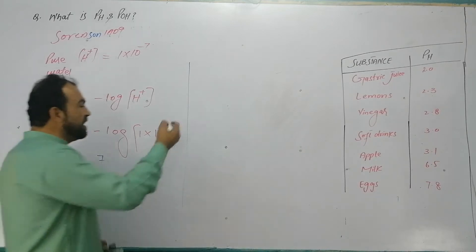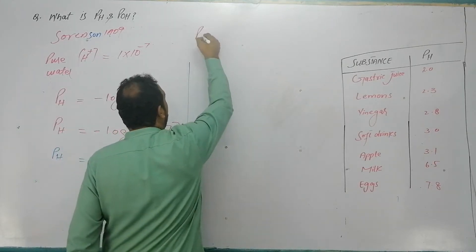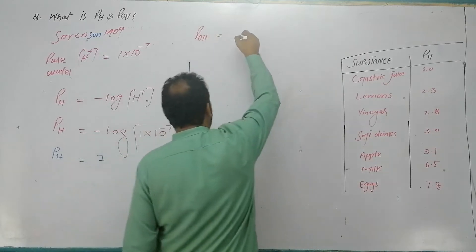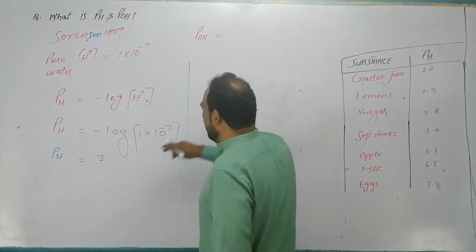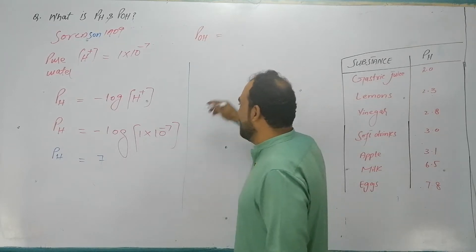Now pH is equal to minus log of concentration of H positive ions in pure water, which is equal to 1 into 10 raised to power minus 7. It is negative log of H positive ions. Power of hydrogen ions is also equal to 1 into 10 raised to power minus 7.